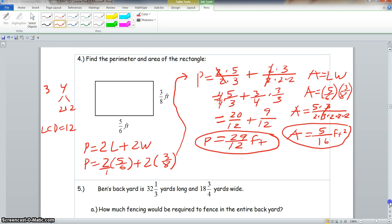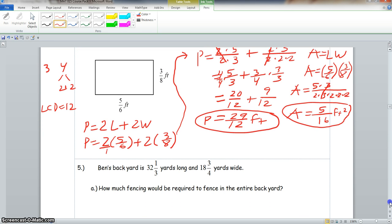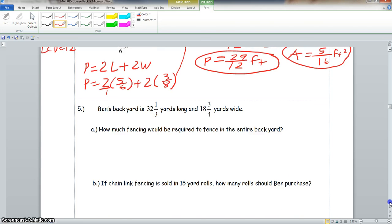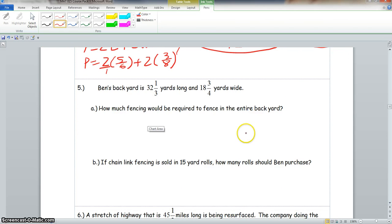Now, we scroll down here to number 5, it says Ben's backyard is 32 and a third yards long and 18 and 3 fourths yards wide. How much fencing would be required to fence in the entire backyard? Now, we know fencing typically is the outside of the yard, so that is perimeter. And most yards are in the shape of a rectangle.